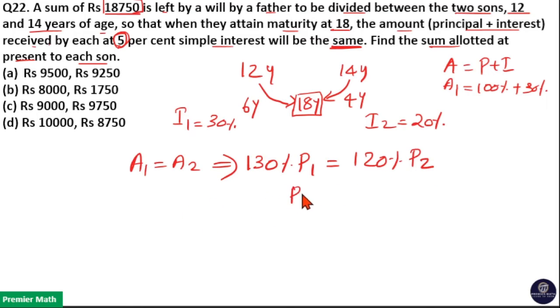Now, P1 by P2 is equal to, here 0 and percentage cancel. So, this will become 12 by 13.